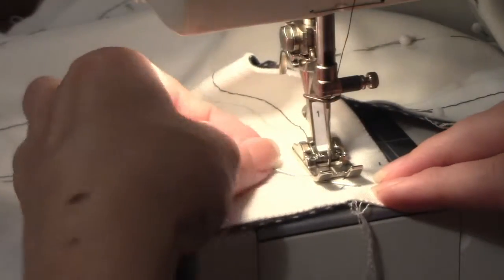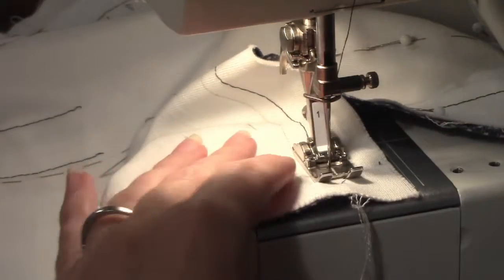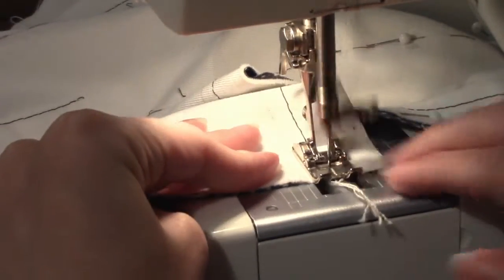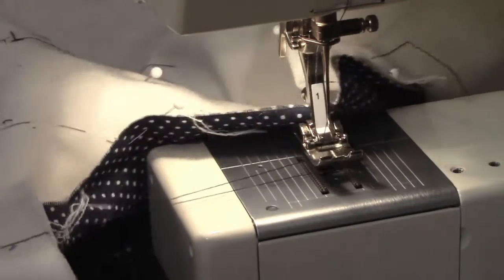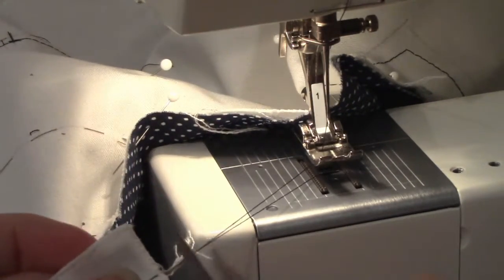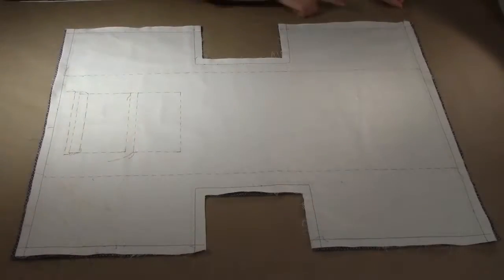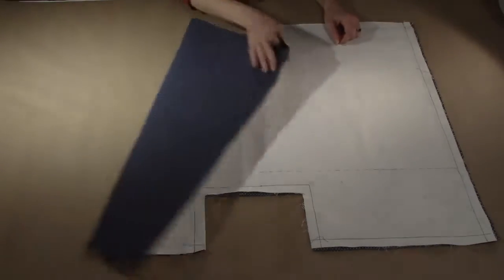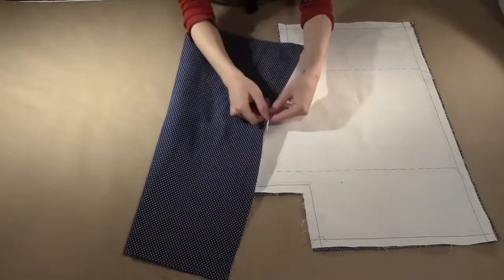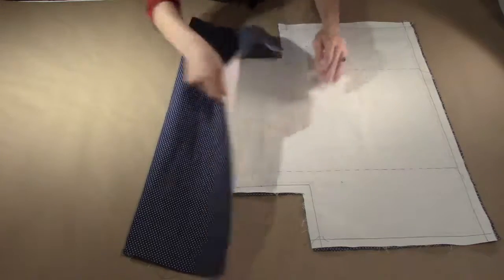Stitch all the way to the edge of the fabric. Do not backstitch. Make sure the needle is in the upright position. Lift the presser foot and pull the work out. Clip your threads at the beginning and end. Turn the fabric and stitch along the next edge. Continue until you have sewn around each side of the fabric. Remove the pins and press it flat. The two layers of fabric should be held together and can now be treated as one.